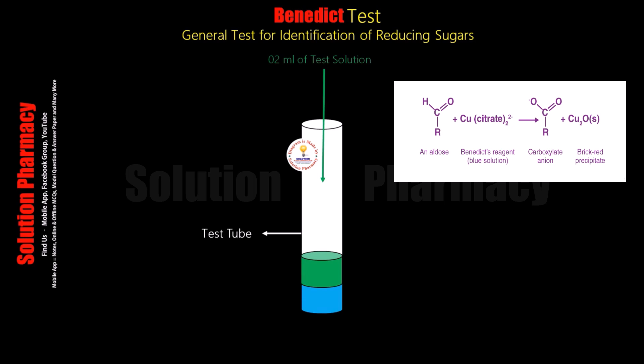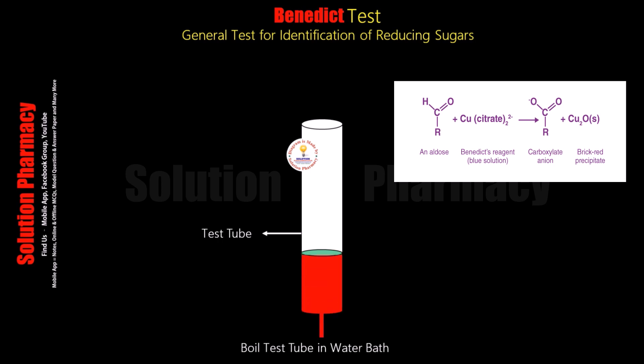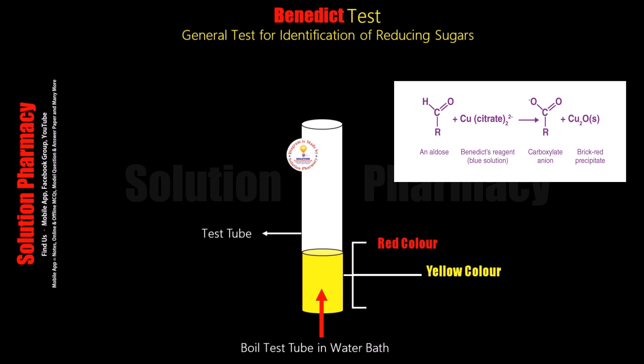After transferring 2 ml of the test solution, mix the contents of the test tube and then boil in a water bath for about two to three minutes. Then observe the color changes. If the color converts into red, yellow, or green, it means reducing sugar is present in the sample — the blue color of the Benedict reagent converts into red, yellow, orange, or green color precipitate in the presence of reducing sugar.